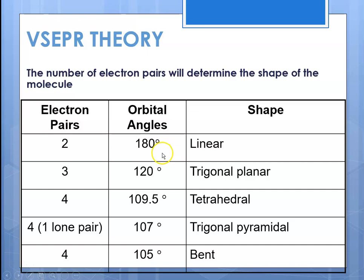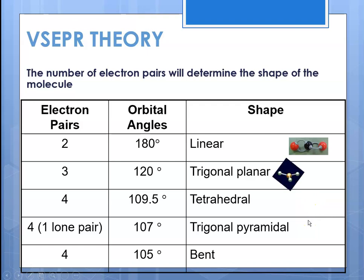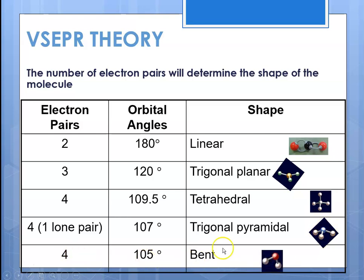Depending on the number of electron pairs — whether 2, 3, or 4 — and whether some are unshared, the shape changes. With only 2 electron pairs, the bond angle is 180 degrees and it's linear, like carbon dioxide. With 3 things and no lone pairs, you get trigonal planar. With 4 electron pairs, you get tetrahedral. With 4 things but one unshared pair, like in ammonia, you get trigonal pyramidal. With 4 things and 2 unshared pairs, you get a bent structure, as in sulfur dioxide.